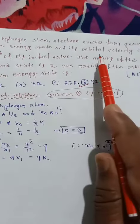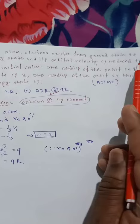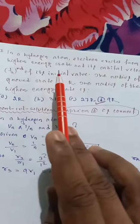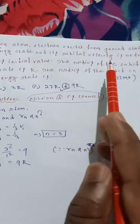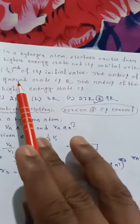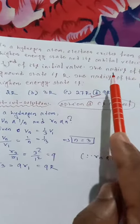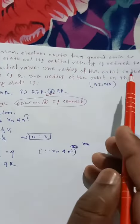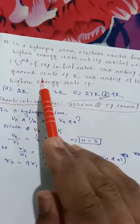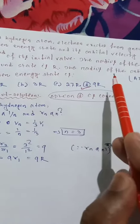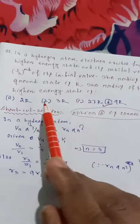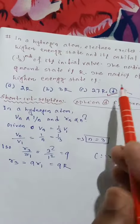So in a hydrogen atom, the electron exhibits from the ground state to the higher energy state and its orbital velocity is reduced to one third of its initial value. The radius of the orbit in the ground state is R. The radius of the orbit in the higher energy state is how much?